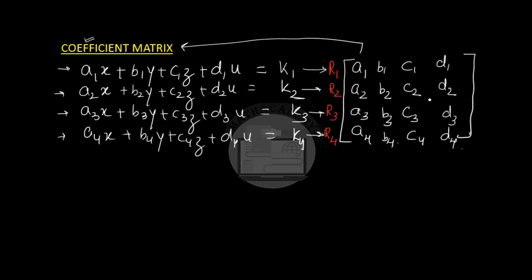You must be thinking: why are we learning augmented and coefficient matrices? Where are they used? In my first video I mentioned that the application of matrices is that they help in solving systems of linear equations. When you have a large number of variables — say 4 or 5 — it is very easy to use matrices to solve them. That is why we have the augmented matrix and the coefficient matrix. Now let us see an example.